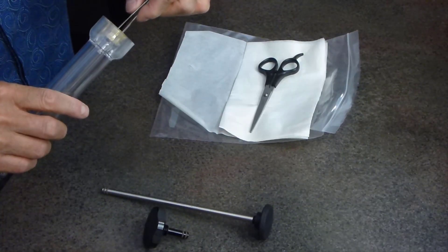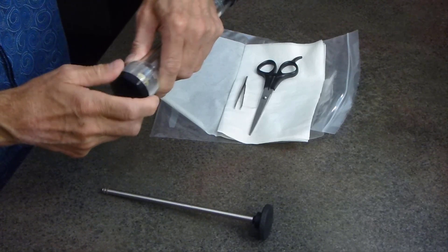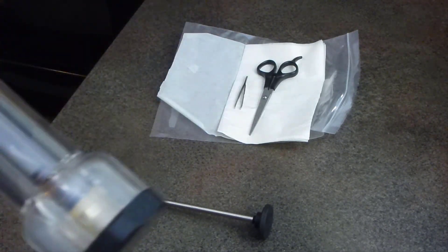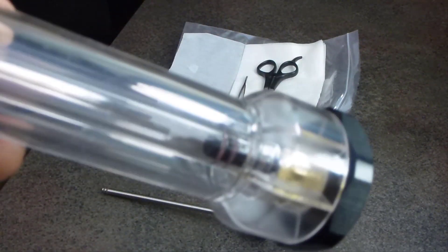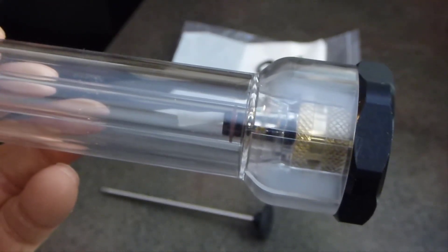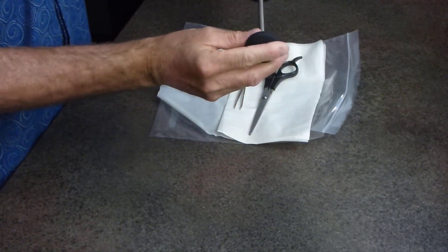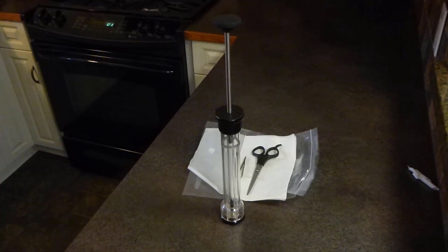Here you can see the piston and the glass cylinder. What I've done is cut a small piece of tissue paper and use tweezers to put it in the bottom of the cylinder. And then the plunger gets inserted and we're ready to go.